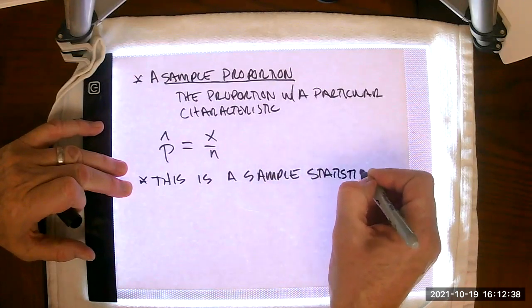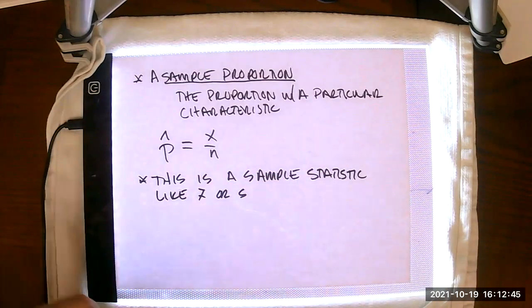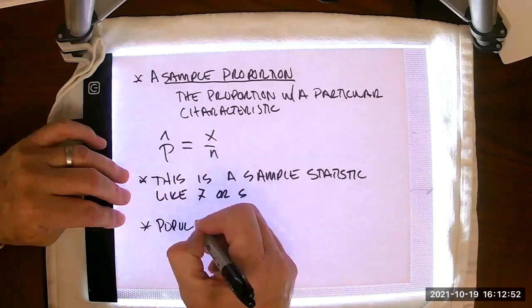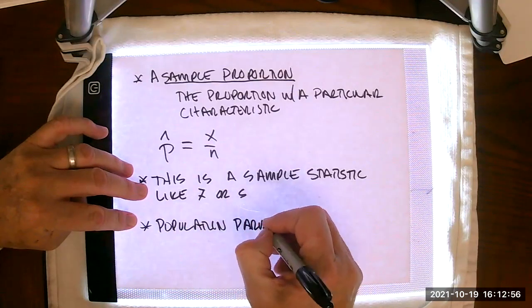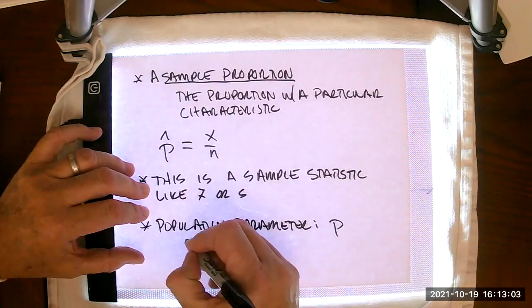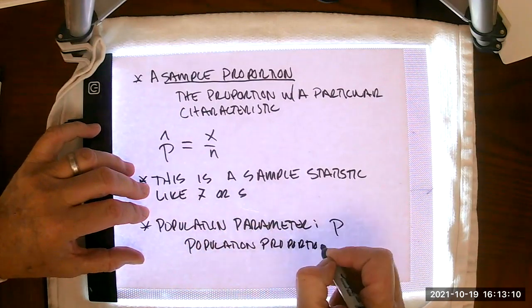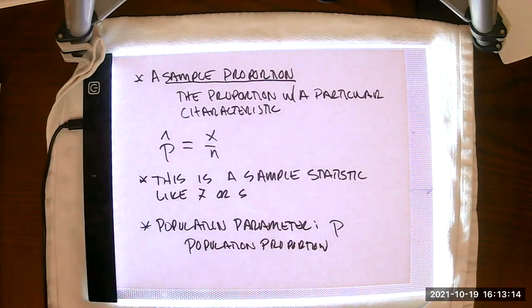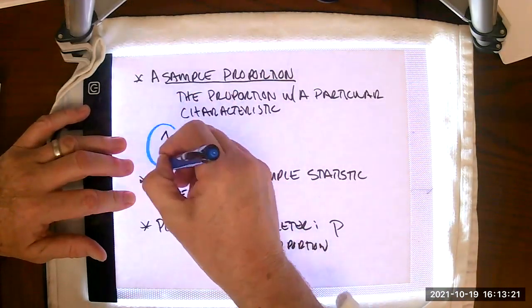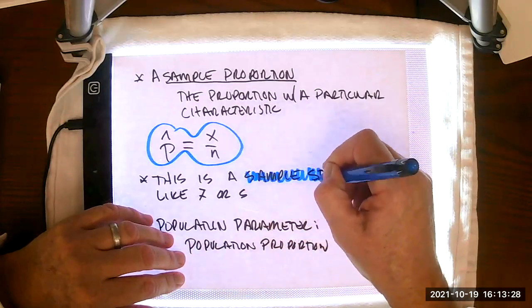Let me give you an actual definition of a sample proportion. It is the proportion with a particular characteristic. P hat equals x over n. Very basic. It comes from your sample, so this is a sample statistic like x bar or s.